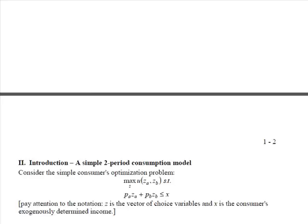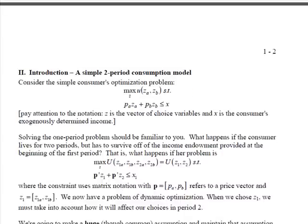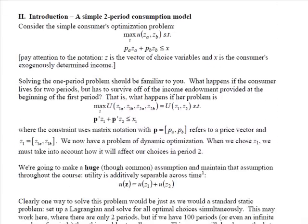So what is a dynamic optimization problem? Well, a dynamic optimization problem is simply a problem that involves choices in many periods over time. And what we're going to start in this first lecture is we're going to take a very simple two-period consumer problem and show that we can solve that in a number of ways.